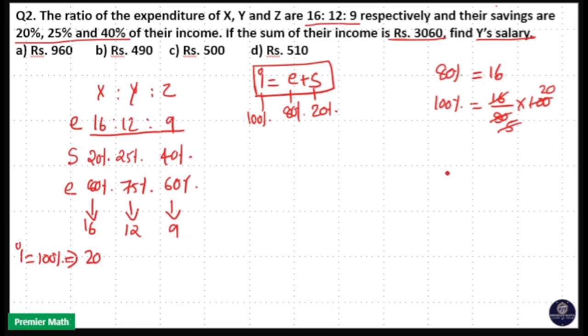Same way if 75% is equal to 12. 75% is equal to 12, that means 25% is equal to 4. So 100% will be 4 into 4, 16. So 16 parts is Y's salary.